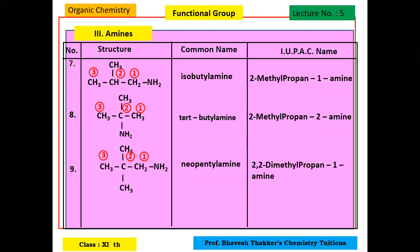2,2-dimethylpropan-1-amine: there are 2 methyl groups on the 2nd carbon. The longest chain is a 3-carbon chain, the amino group is on the 1st carbon, so propan-1-amine is the parent. But since there are 2 methyl groups on carbon 2, we write 2,2-dimethyl first. Let's copy it. Next functional group, the fourth one, we will be doing ketones.